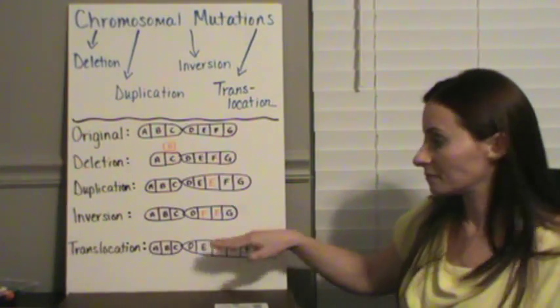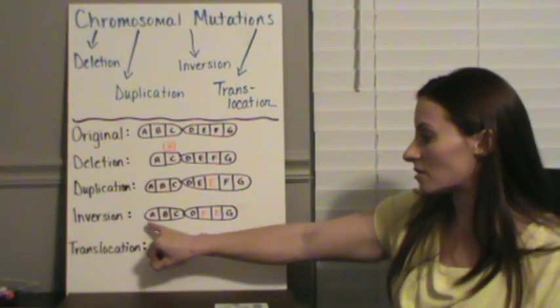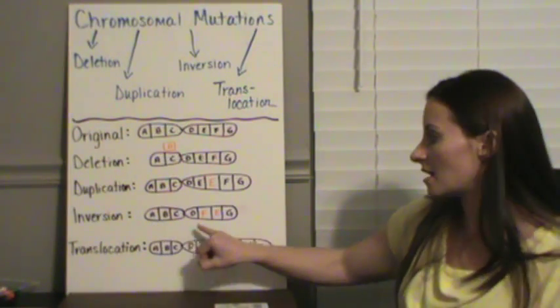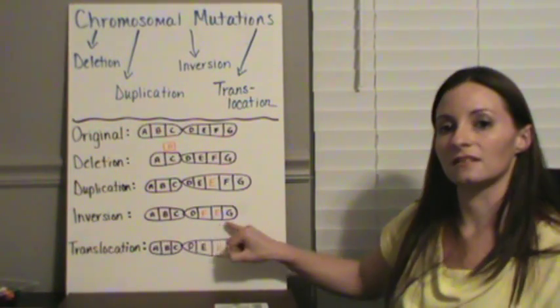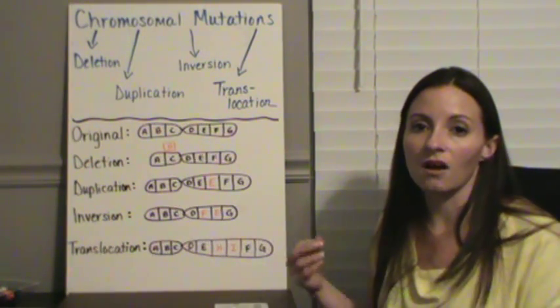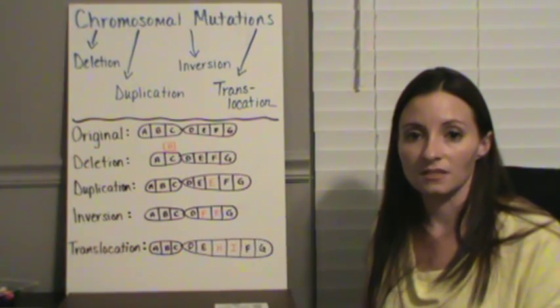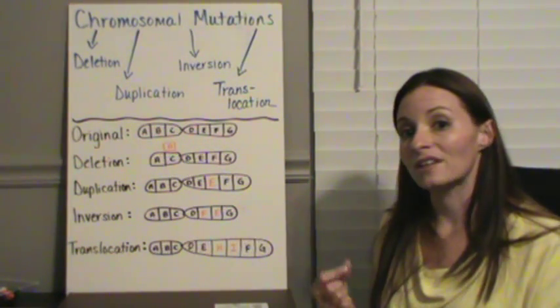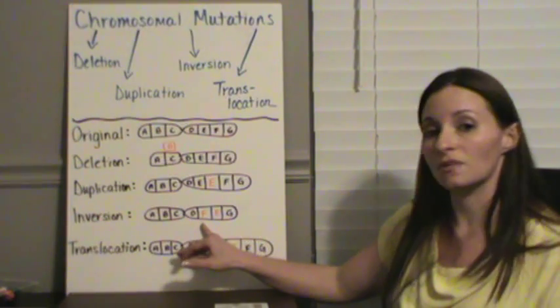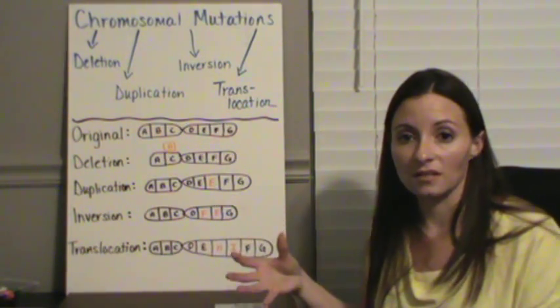An inversion would be where we take two and switch them. So here we have ABCDEFG. This could be a problem because our RNA polymerase, when it's trying to read a protein or read the DNA strand, might be trying to code for E but it ends up coding for F because it's in the wrong place. So that could become a problem.